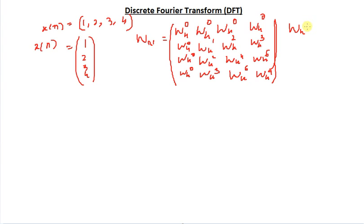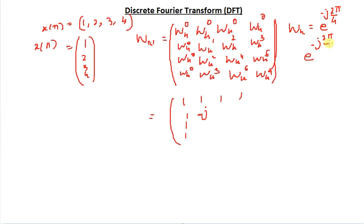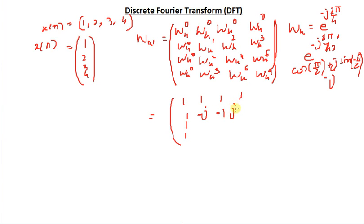W4 equals e to the minus j 2 pi over 4. We can compute each of these values. Since anything raised to 0 is 1, the first row and column are all 1s. For W4 raised to 1, we get e to the minus j pi over 2, which gives cos(pi/2) plus j times sin(minus pi/2), and this equals minus j. So we get minus 1 in some positions and j in others, giving us the full matrix: first row [1,1,1,1], then entries with minus j, minus 1, and j.